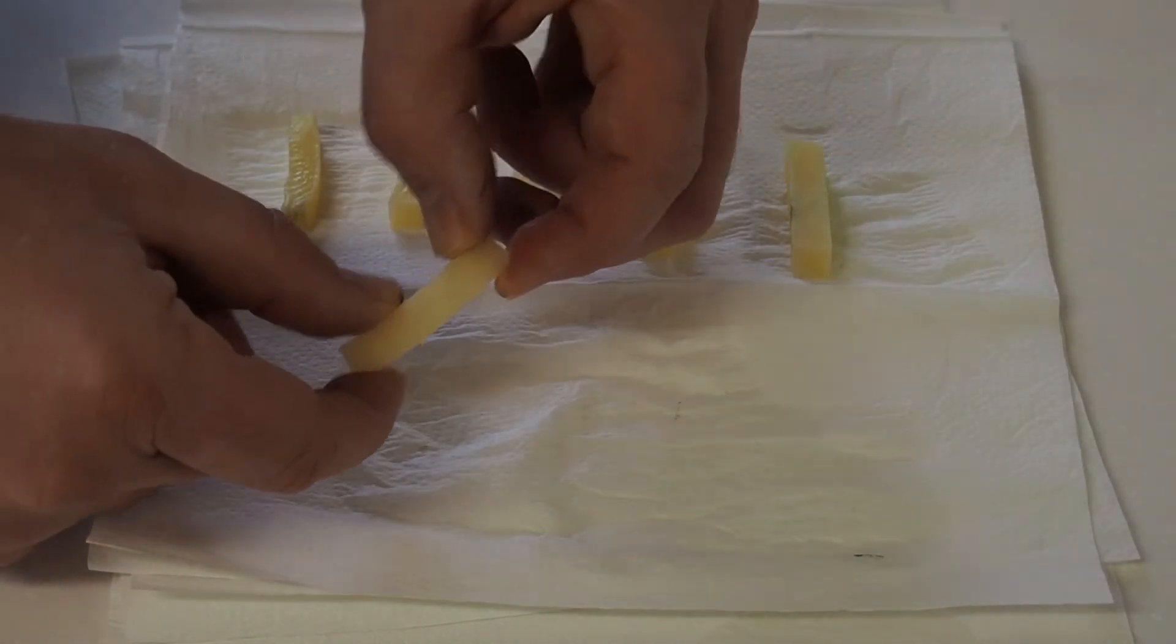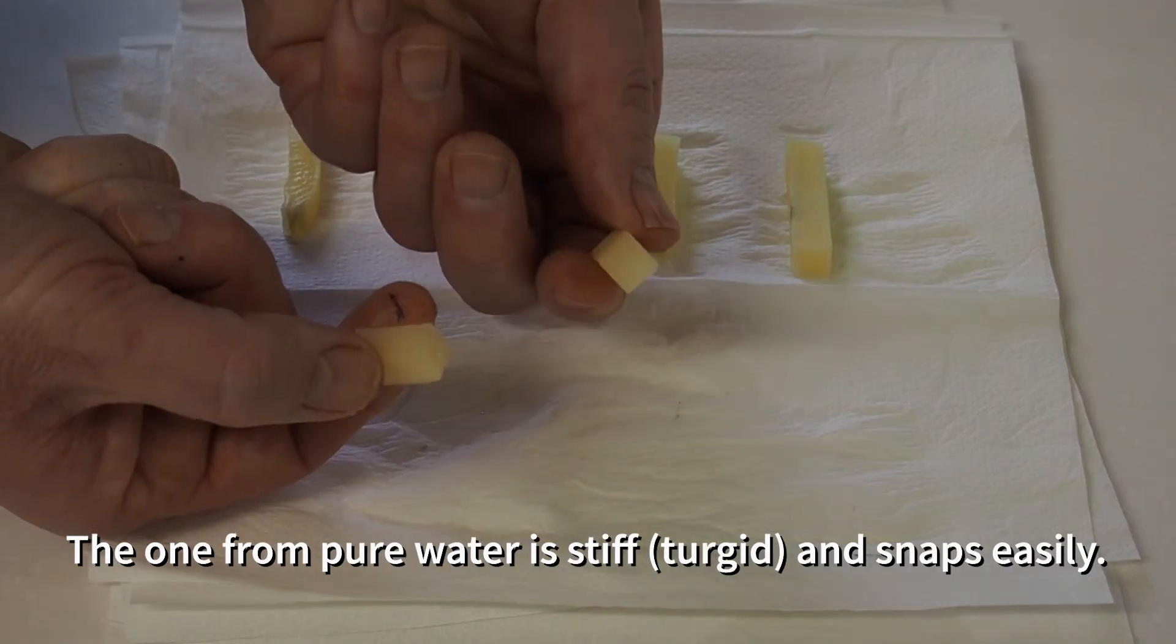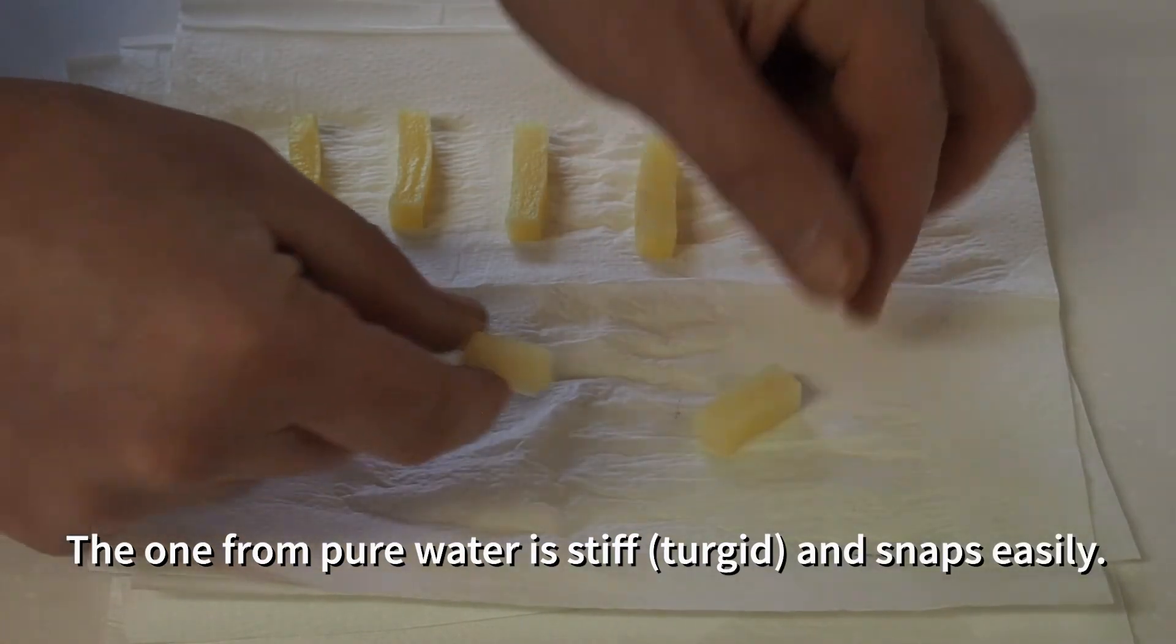If you look at the one from the pure water, it's much stiffer, it's turgid, and it snaps easily if you try and bend it.